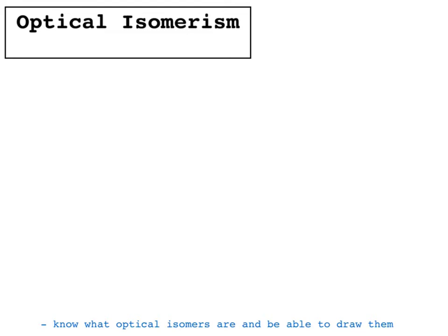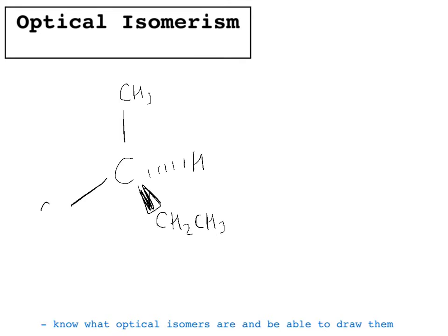Optical isomers arise when you have four different groups around a carbon atom. Say we have a carbon atom drawn in 3D — a tetrahedral arrangement around it — with a CH₃, an H, a CH₂CH₃, and a Cl attached to it.